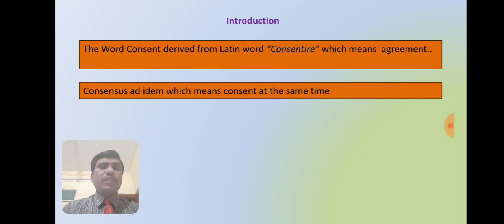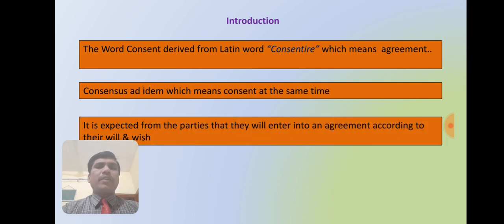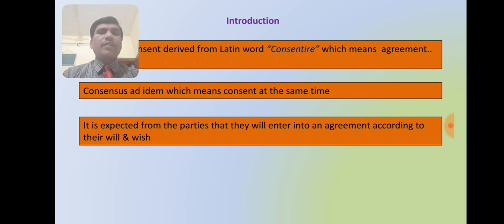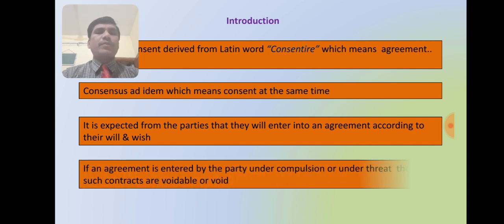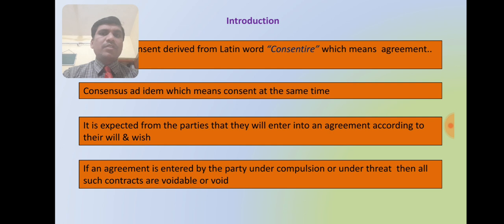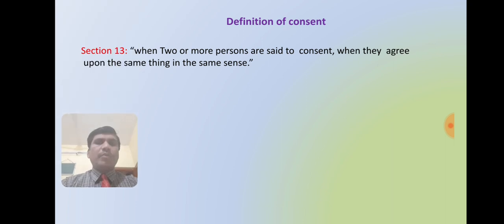'Consensus ad idem' is a Latin maxim which means consent at the same time. Whenever parties are entering into an agreement, such agreement should be without any burden or pressure. It is expected from the parties that they will enter into an agreement according to their will and wish. If an agreement is entered by a party under compulsion or under threat, all such contracts are voidable or void.